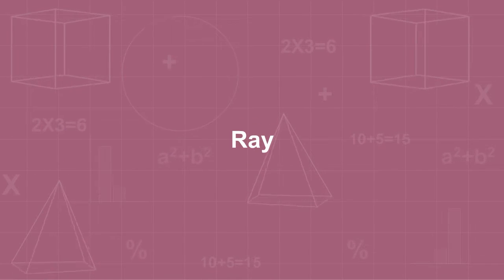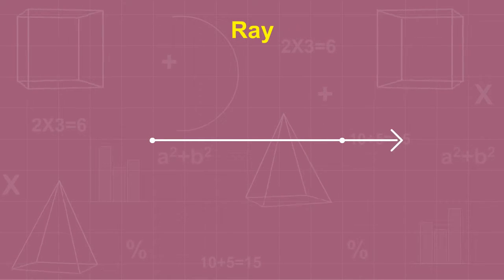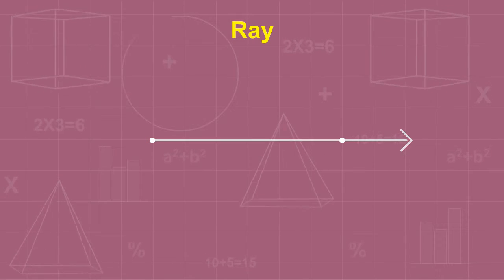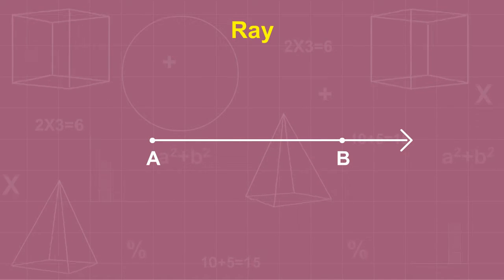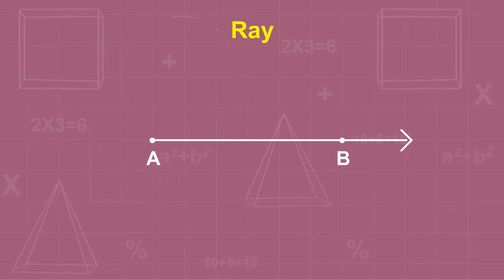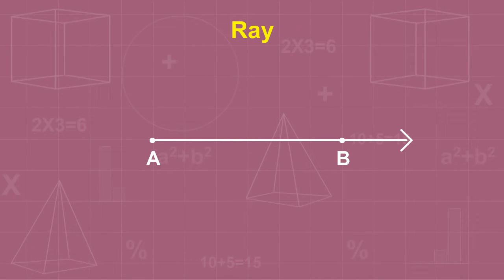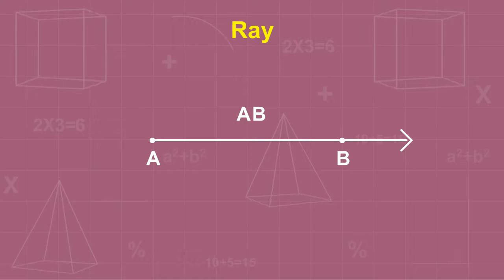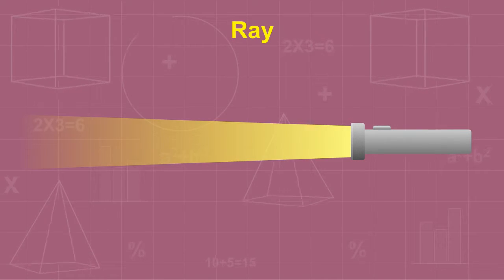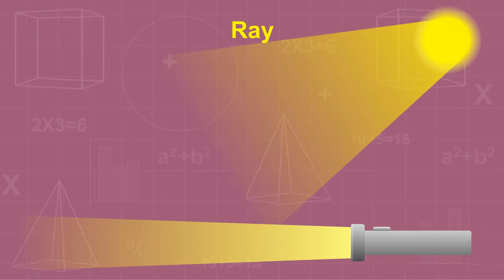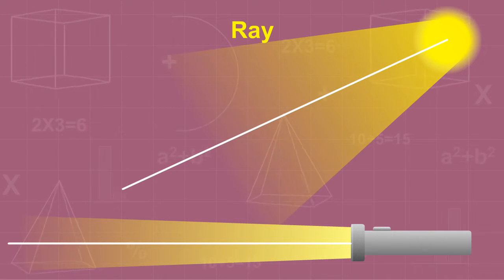A line segment extended endlessly in one direction is called a ray. A line segment AB extended in the direction from A to B and marked by an arrow at B represents a ray AB, denoted by AB. For example, light emerging from a torch or the light rays from the sun. A ray is a part of a line with one endpoint.